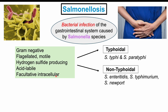There are different species of Salmonella bacteria. We separate them into typhoidal Salmonella and non-typhoidal Salmonella. Typhoidal Salmonella, like Salmonella typhi and paratyphi, lead to typhoid fever. The non-typhoidal species — including Salmonella enteritidis, Salmonella typhimurium, and Newport — lead to gastroenteritis, or inflammation of the gastrointestinal system, which is what we'll discuss in this lesson.